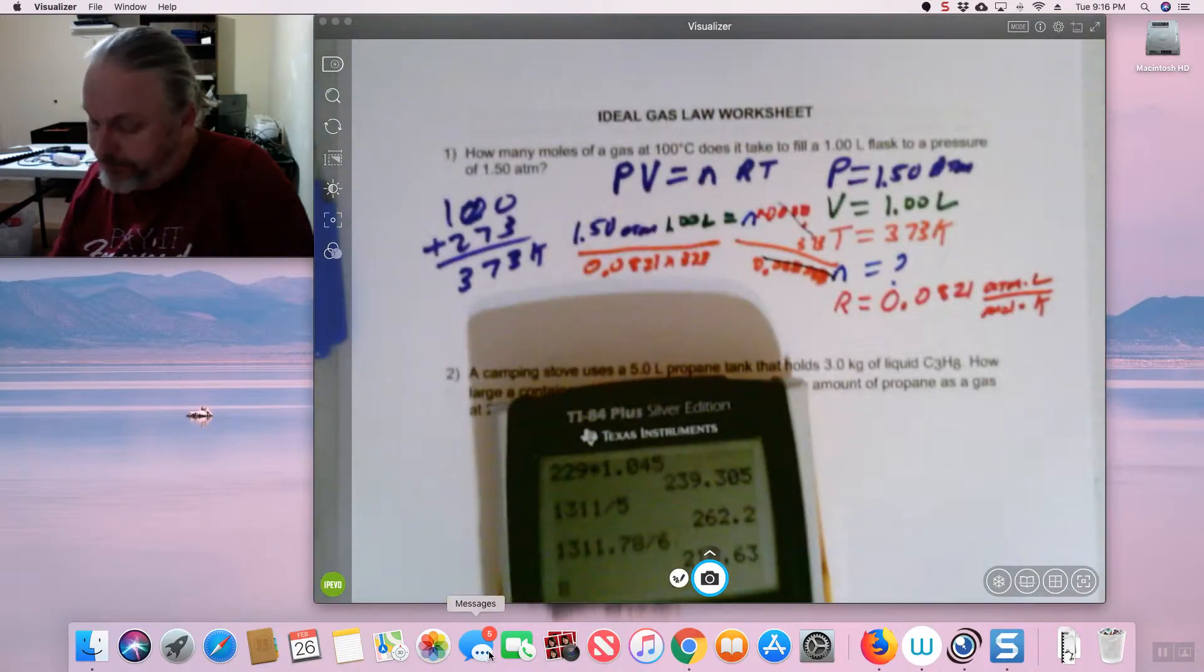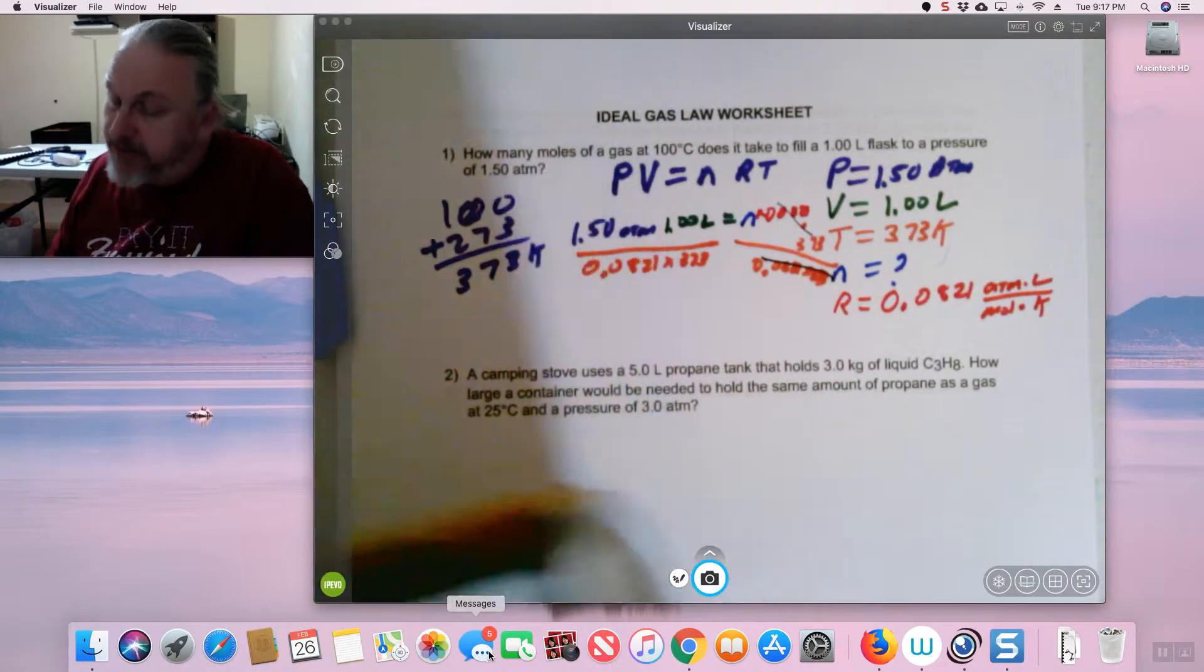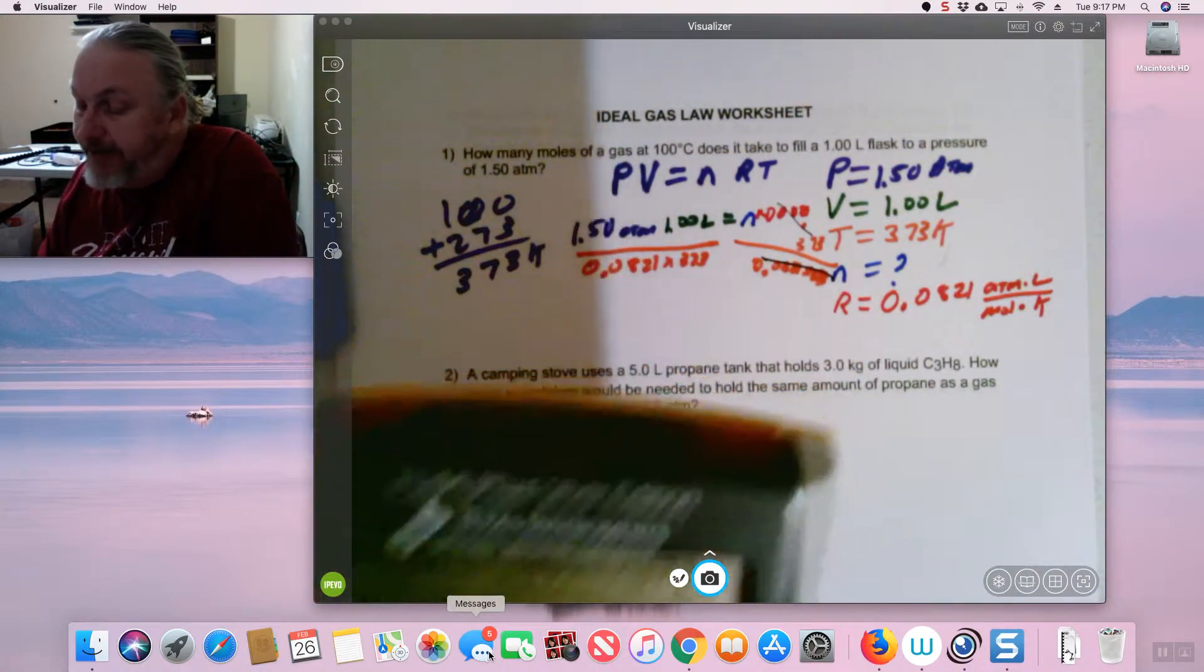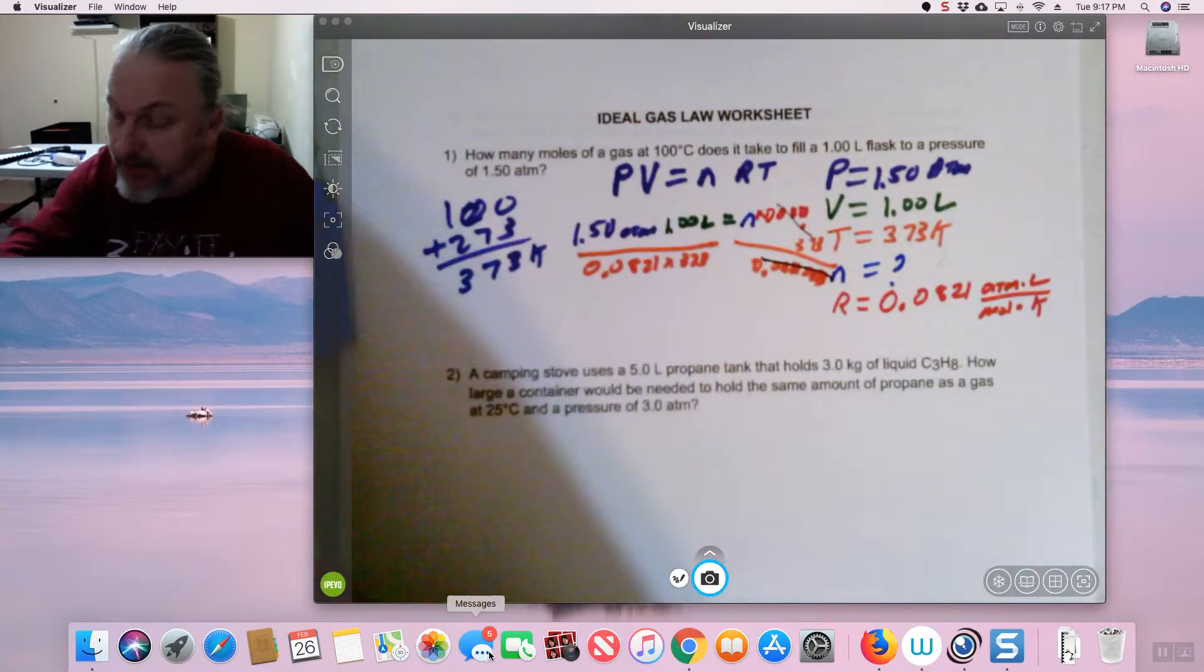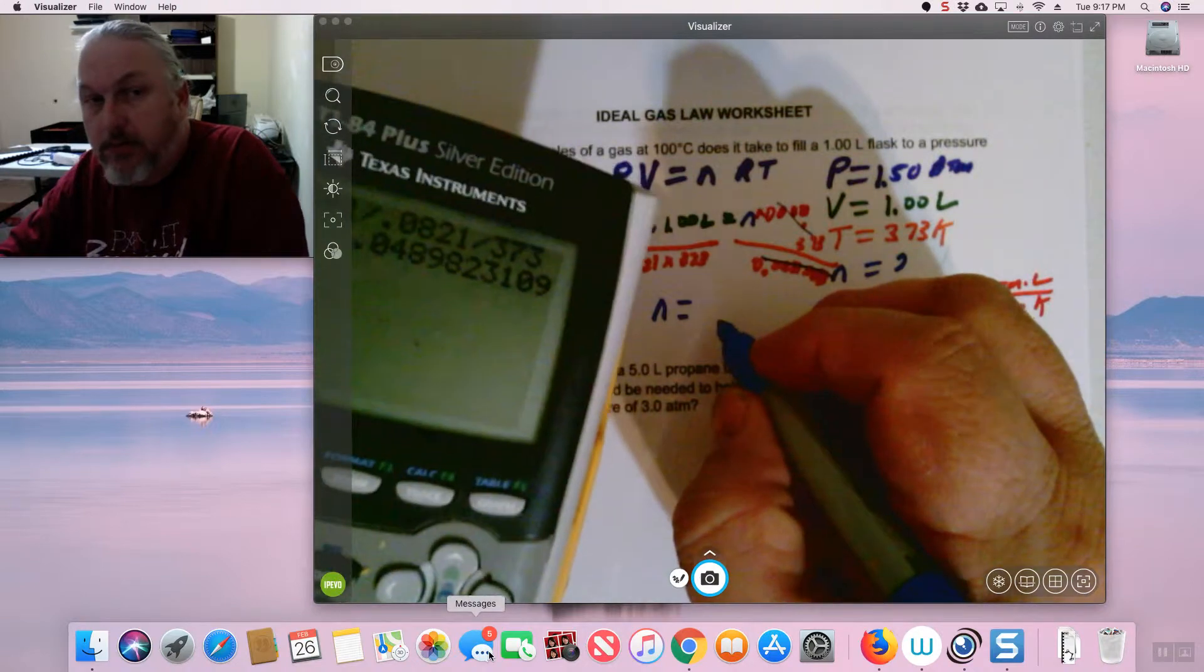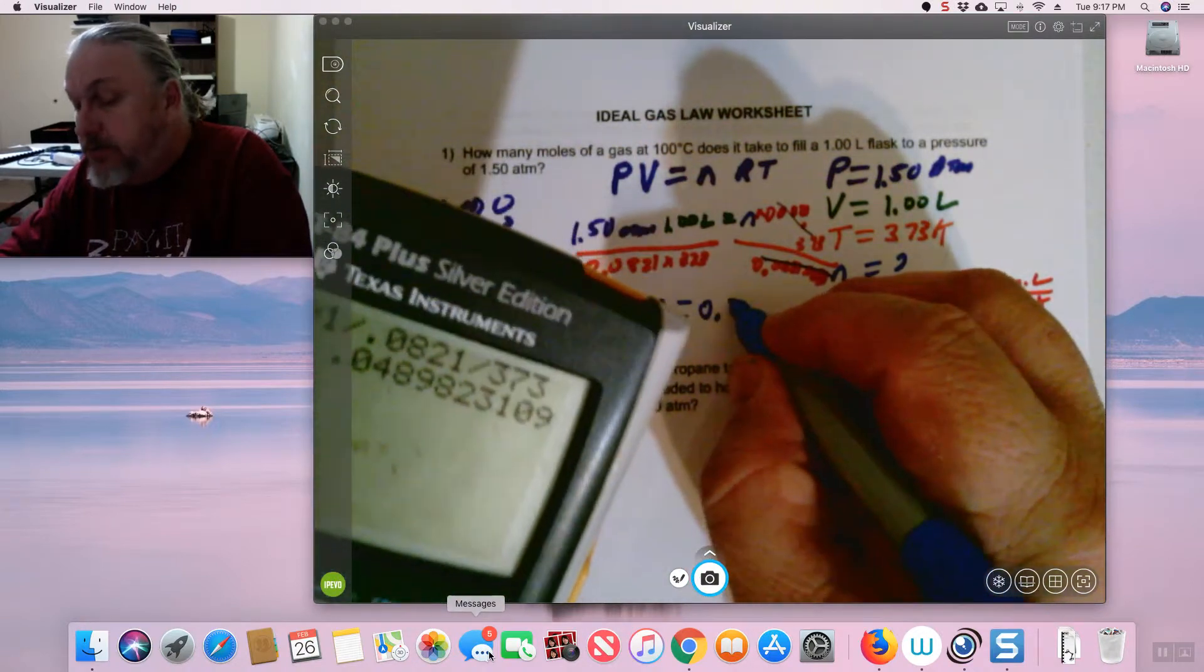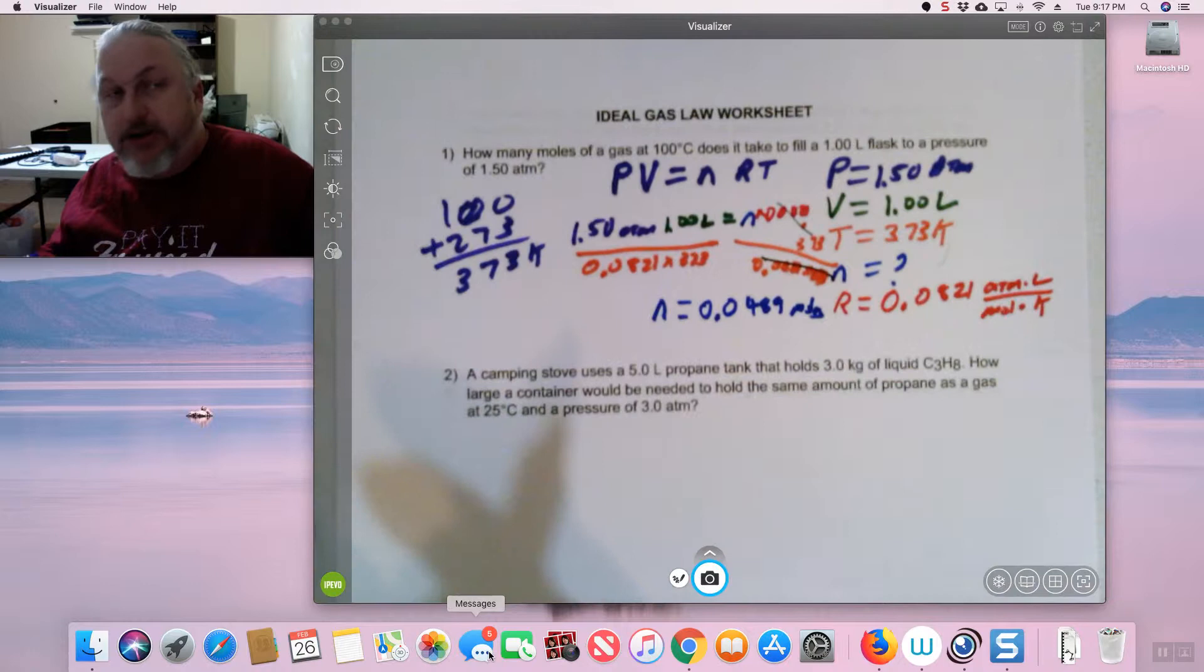Get my handy-dandy calculator. Clear it. 1.5 times 1. And look what I can do. I can just hit divide. 0.0821. And then I don't have to multiply that together. I can just hit divide again, because it does work. 373. And my answer is 0.0489. And we're going to write that. N equals 0.0489 moles. And essentially, this is a plug-and-chug type thing.